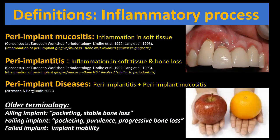Let's go over the definitions first. Peri-implant mucositis is similar to gingivitis where inflammation is confined to the soft tissue and has not spread to the bone. Peri-implantitis is where inflammation has spread to the bone around the implant. The term peri-implant diseases includes both. This is the standard terminology used now, emphasizing the role of inflammation. The older terminology of ailing and failing implants was confusing and imprecise, and we should not use those terms anymore.